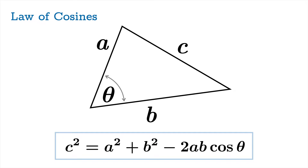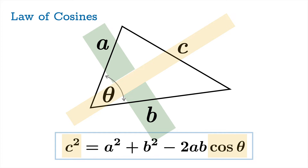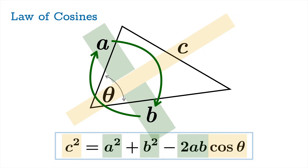Before we get going, let's notice something about this formula. There's sort of an axis of action — a privileged position that both the side c and the angle theta have — and then flanking this axis is the pair of sides a and b. In the formula, c and theta have a privileged position, and a and b play identical roles. If you literally swapped a and b, you'd have the very same formula. This can help you keep the law straight when looking at a triangle.